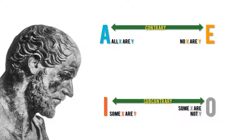Alright. Now, in addition to that, I is a subaltern of A, and O is a subaltern of E, meaning if A is true, then I has to be true, and if E is true, then O has to be true.